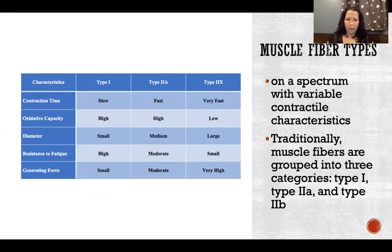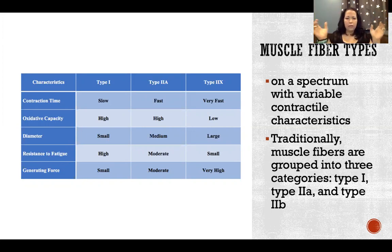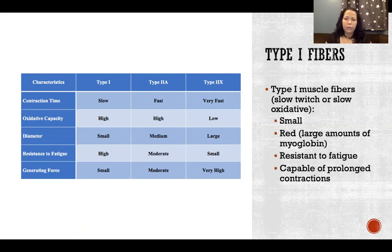Muscle fibers don't cleanly fit into type 1, type 2a, or type 2b. We could make five or ten categories and group them by characteristics, because we're taking something on a sliding scale and trying to classify it. We use those categories to help group and understand muscle fiber characteristics, but it's not black and white.